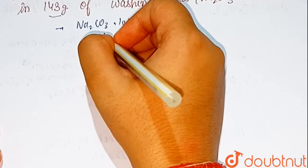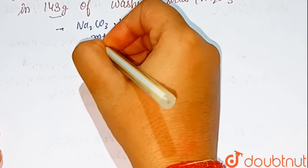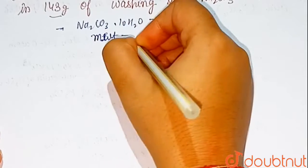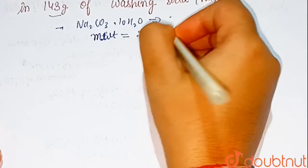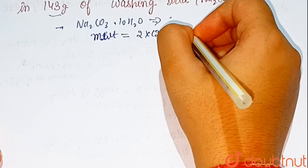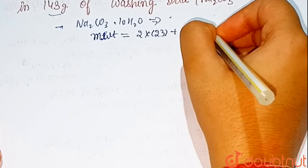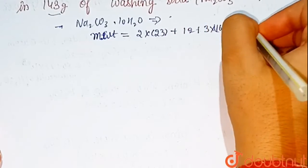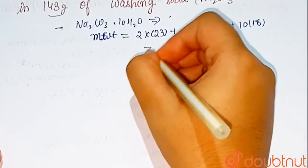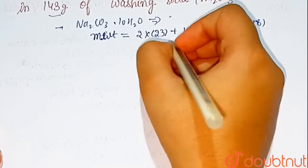Let us calculate its molecular weight. Molecular weight equals 2 times 23 plus 12 plus 3 times 16 plus 10 times 18 which is equal to 286 grams.